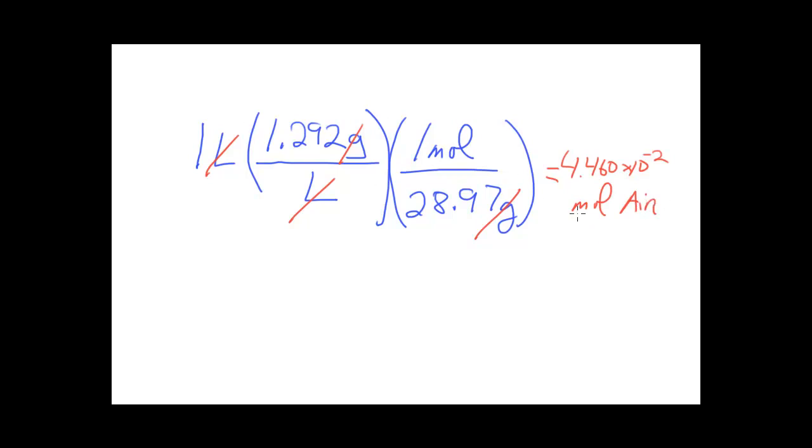Now I'm going to take this value and using Avogadro's hypothesis, I can state that 4.460 times 10 to the minus two moles of air times the percent by volume nitrogen, which is also the percent by moles of nitrogen, will tell me how many moles of nitrogen I have in that total mole value of air. In this case, I get 3.48 times 10 to the minus second moles of nitrogen.